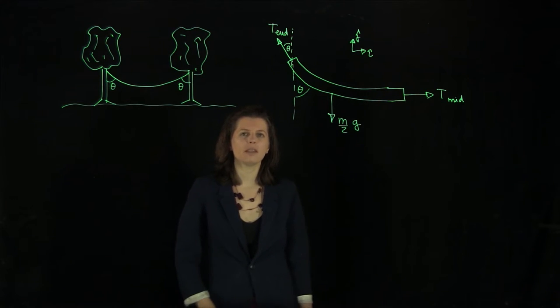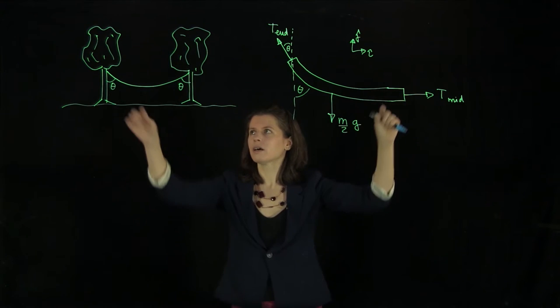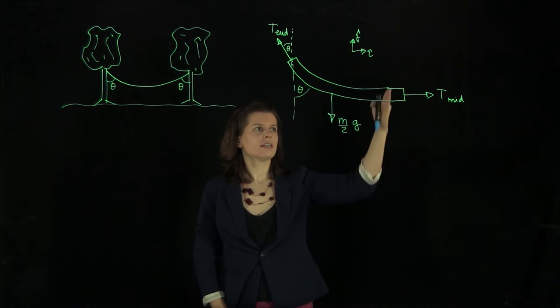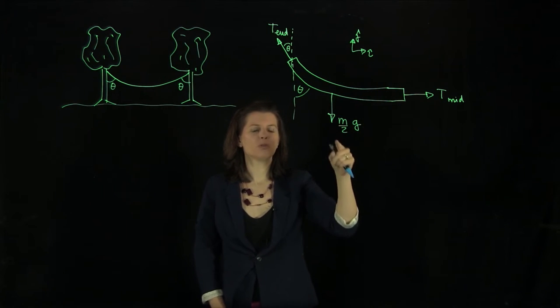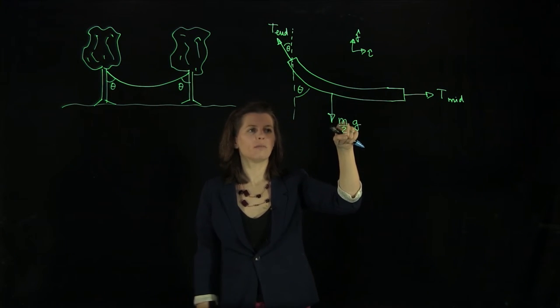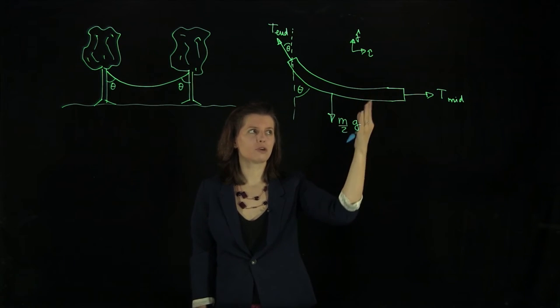And here we already have the free body diagram. I just drew this piece of the rope here that's hanging on this tree here. And we made an imaginary cut. We just cut it in the middle, which means gravity is obviously acting on it. It's hanging through. But it does so with m half here for our half rope.